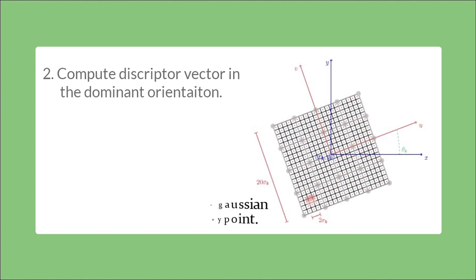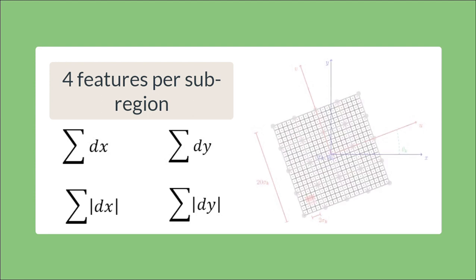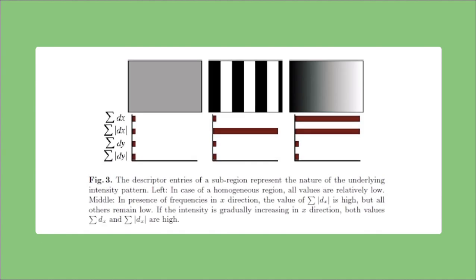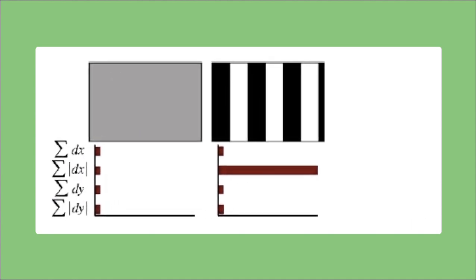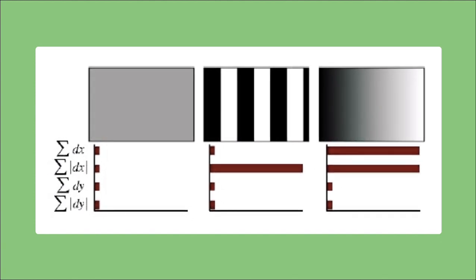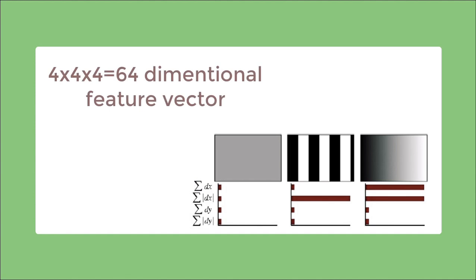We extract 4 features for each of the 16 sub-regions which are the summation of the gradients in the x-direction, the summation of the gradients in the y-direction, the summation of the absolute value of the gradients in the x-direction, and the summation of the absolute value of the gradients in the y-direction. For example, look at the three patches below. The first patch is of a homogeneous region. Therefore, all four values are low. The second patch has stripes in the x-direction. Thus, the summation of the absolute values of gradients in the x-direction is high, but other feature values remain low. In the last patch, the intensity gradually increases in the x-direction, making the first two feature values higher.